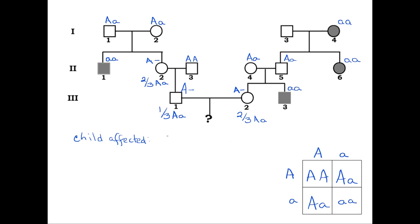We can use the product rule again, multiplying these probabilities to calculate the overall probability that both of them are Aa, and that they have an affected child.